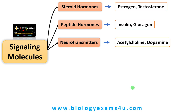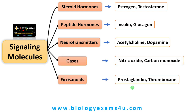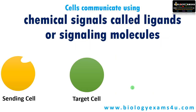Hi friends, hope you're fine. In the last video we discussed about four types of cell signaling. In this video let us understand six types of signaling molecules. Let's begin with what are signaling molecules or ligands. Cells communicate using chemical signals called ligands or signaling molecules.